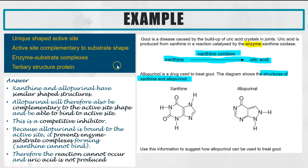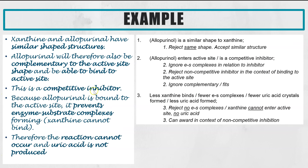So that's just one example to show the stages I would use — it's all about subject knowledge and using those key words. Comparing this to the mark scheme, I have included more information than is actually needed, but I would always do that to cover all bases. The marks were: pointing out it's a similar shape to xanthine; pointing out it can bind to the active site or it's a competitive inhibitor; and finally that there are fewer enzyme substrate complexes.